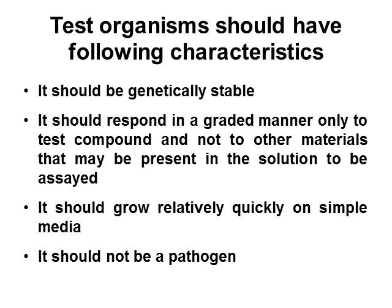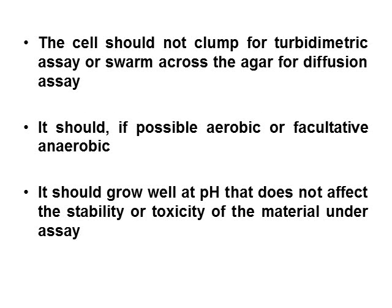This assay requires test organisms, but we cannot use any organism — it requires a specific organism. Test organisms should have the following characteristics: it should be genetically stable; it should respond in a graded manner only to the test compound and not to other materials that may be present in the solution for assay; it should grow relatively quickly on simple media; it should not be a pathogen; cells should not clump for turbidometric assay or swarm across the agar for diffusion assay; it should, if possible, be aerobic or facultative anaerobic; and it should grow well at a pH that does not affect the stability or toxicity of the material under assay.